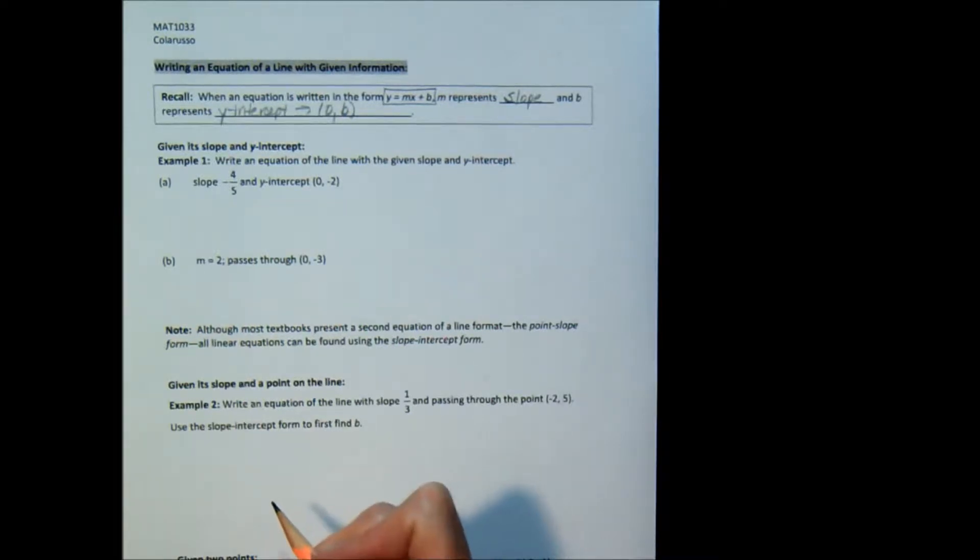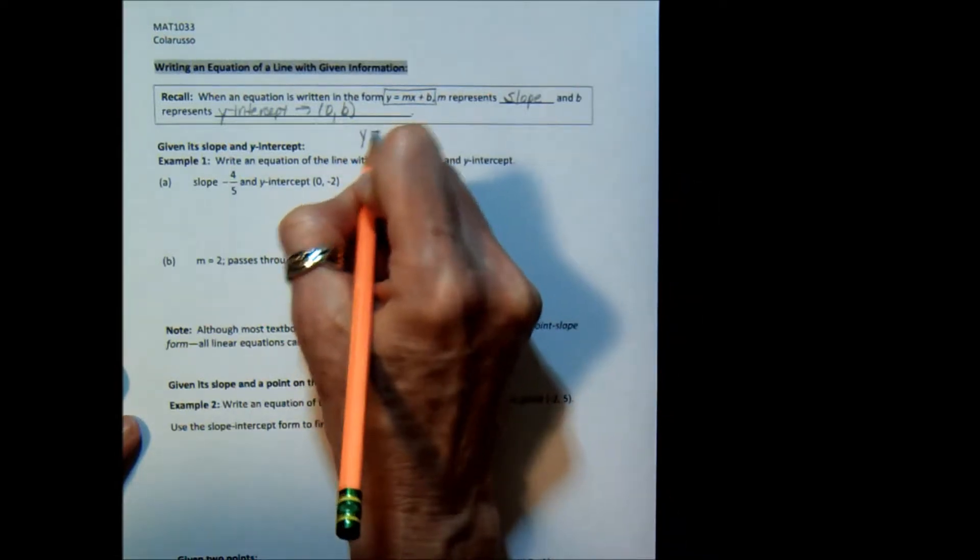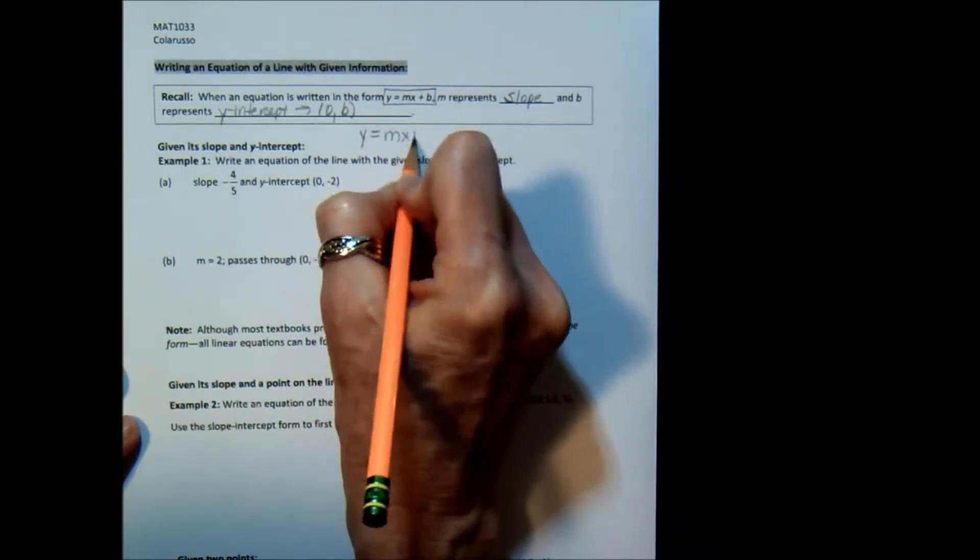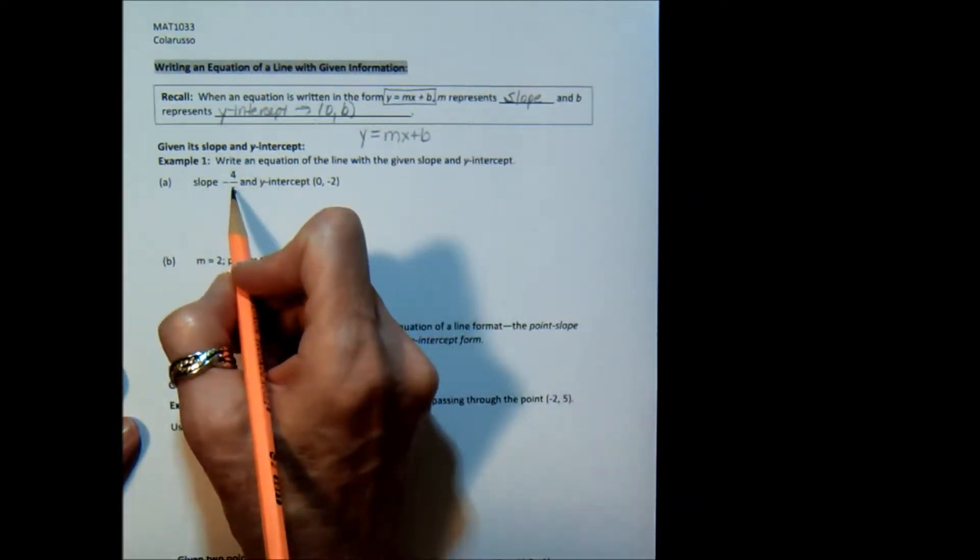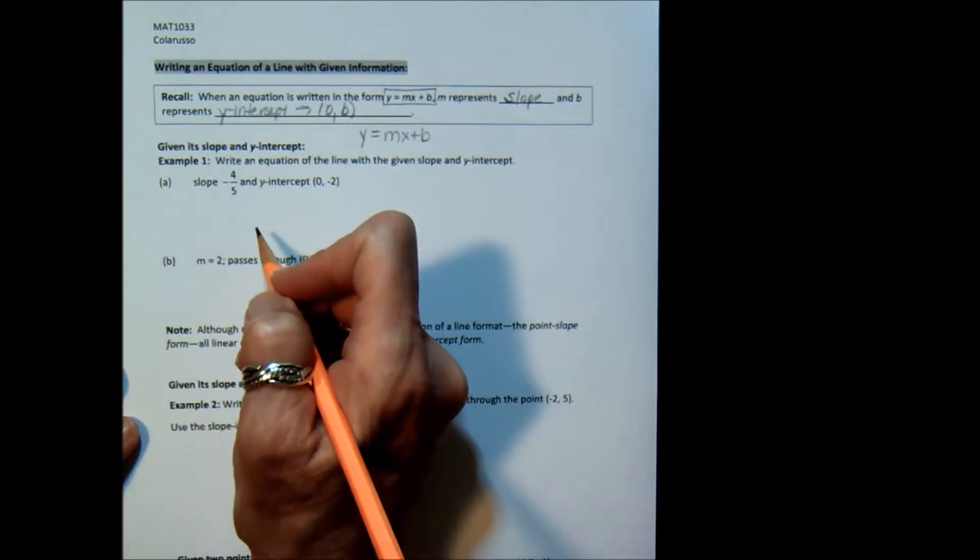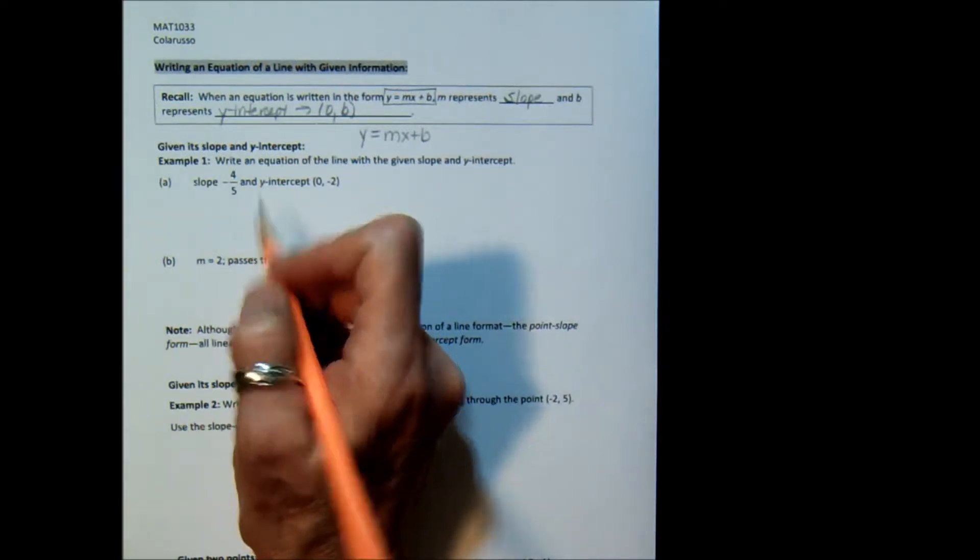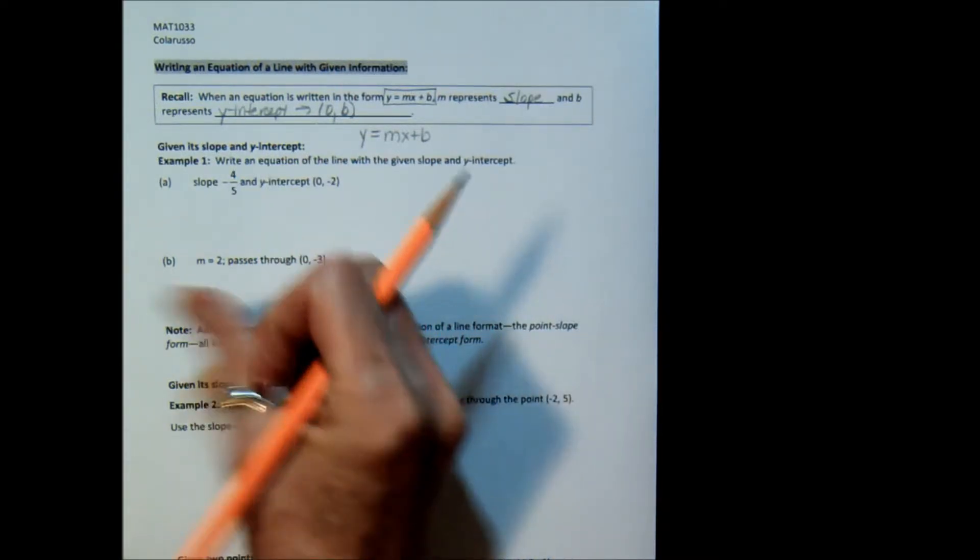So our goal here is to take information and get that information into an equation of y equals mx plus b. So let's look at example 1a when you're actually given the slope and given the intercept. This is the easiest time that you're going to have for writing an equation.